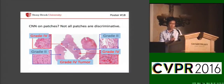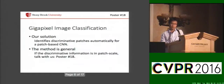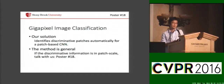However, not all patches are discriminative. As you can see here, this is a grade 4 tumor, but some of the regions may be grade 2 or even healthy tissue. To address this, we propose a method that identifies discriminative patches automatically for patch-based CNN. Our method is also general — we apply it to other image types, so if you have a similar problem like texture classification, you can talk with us.